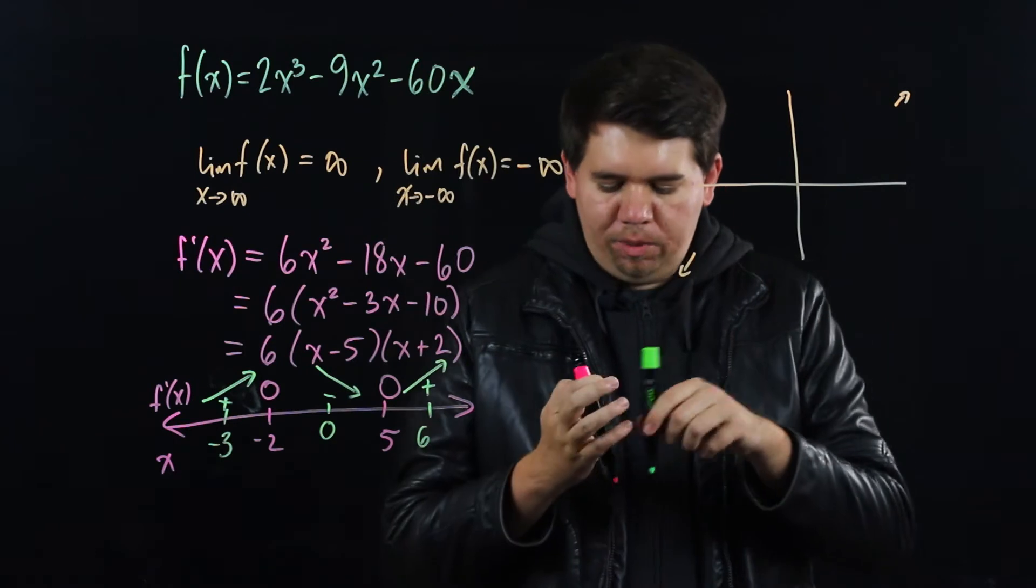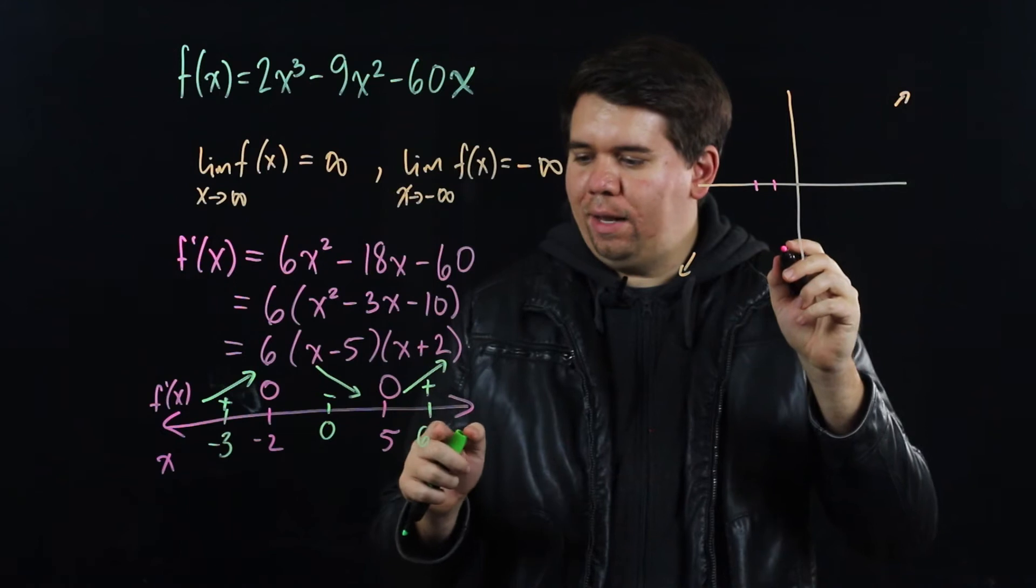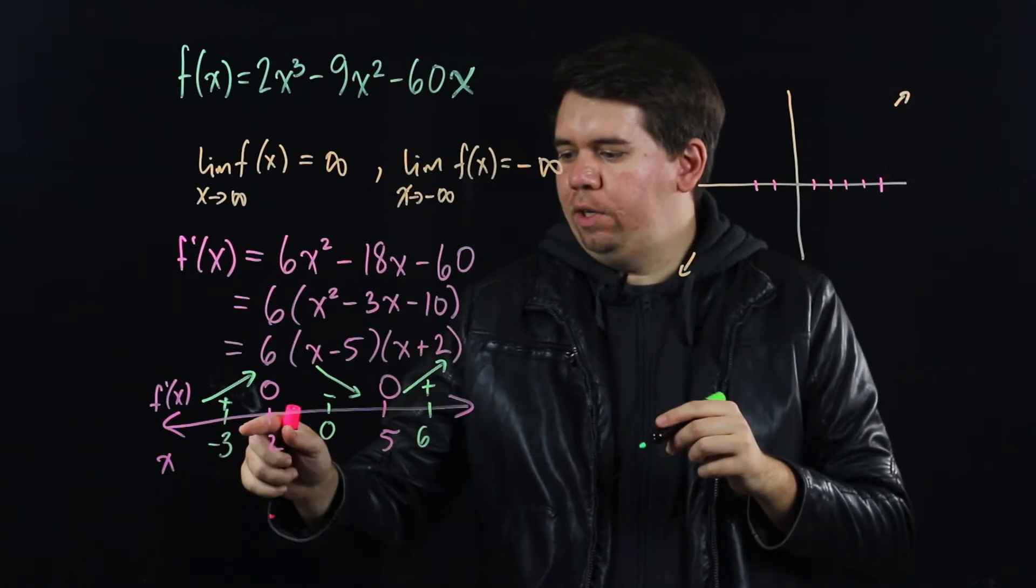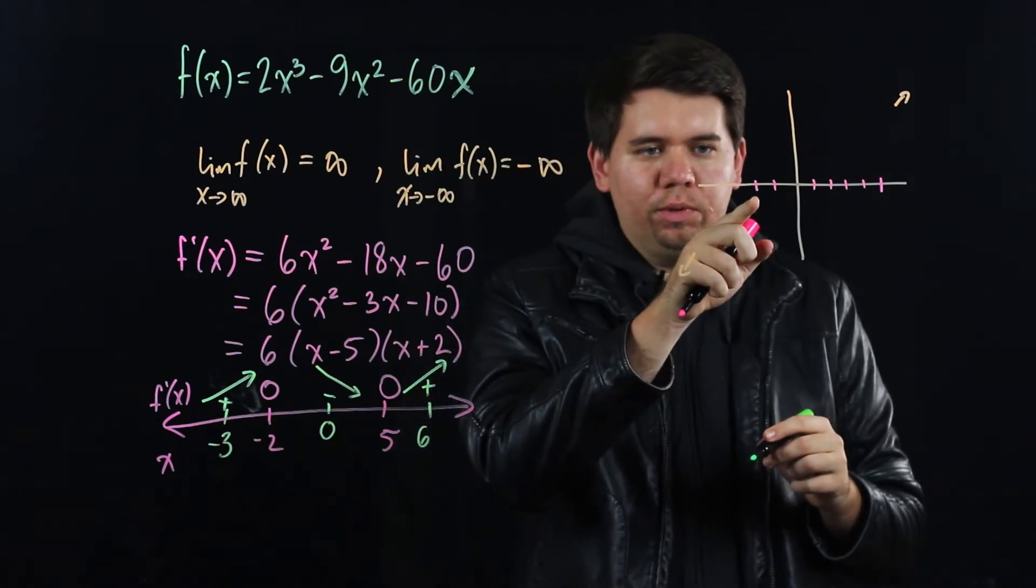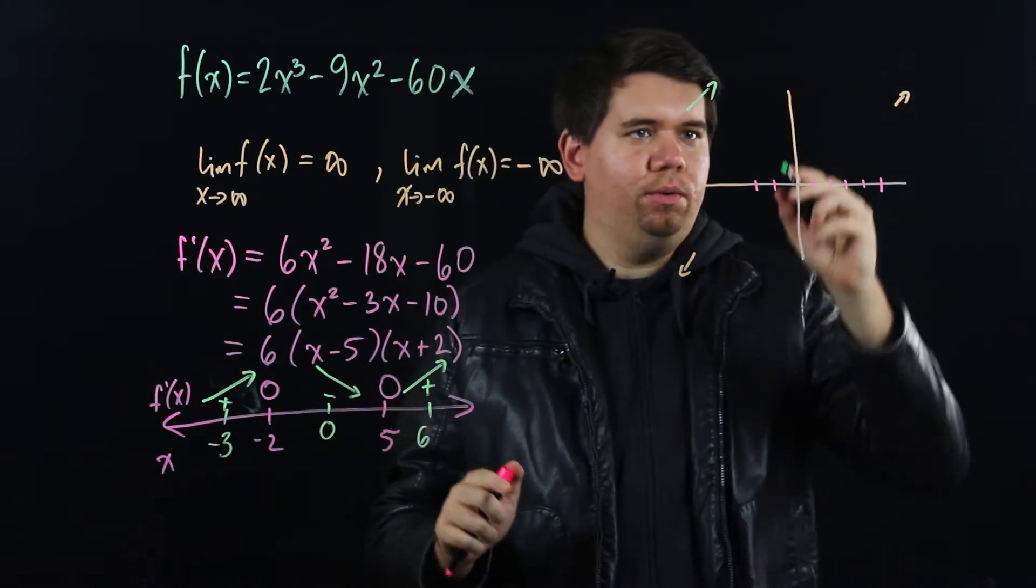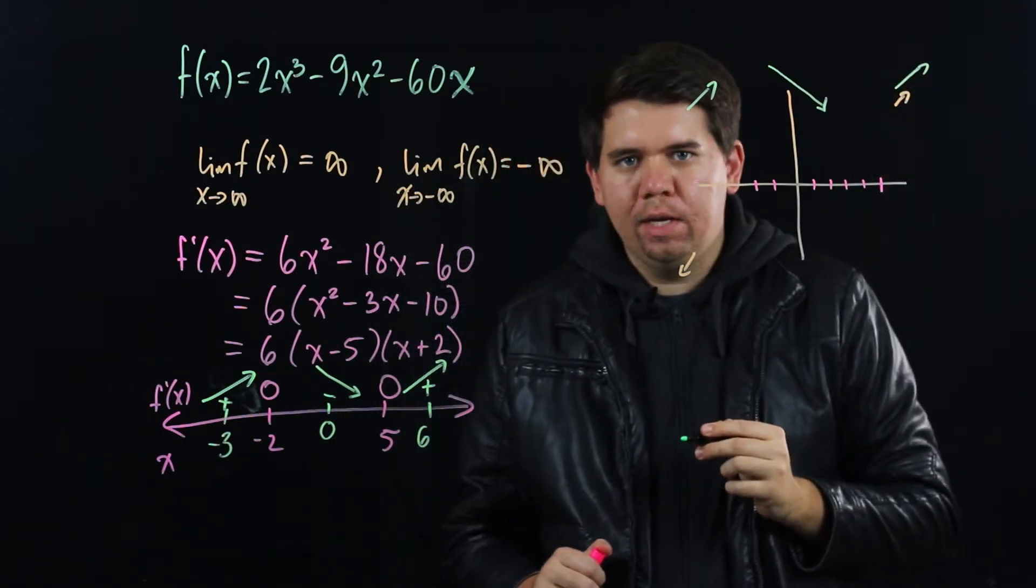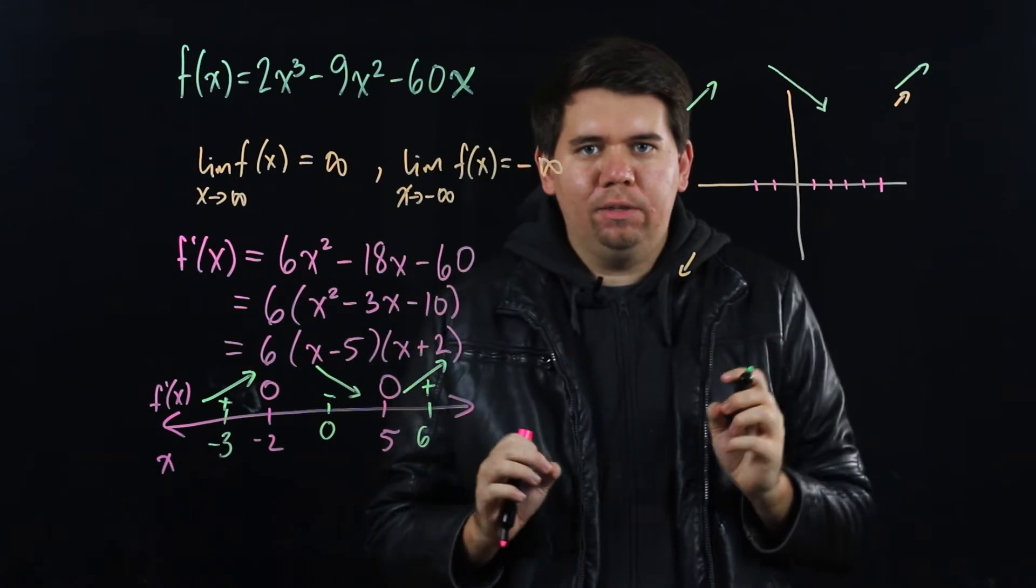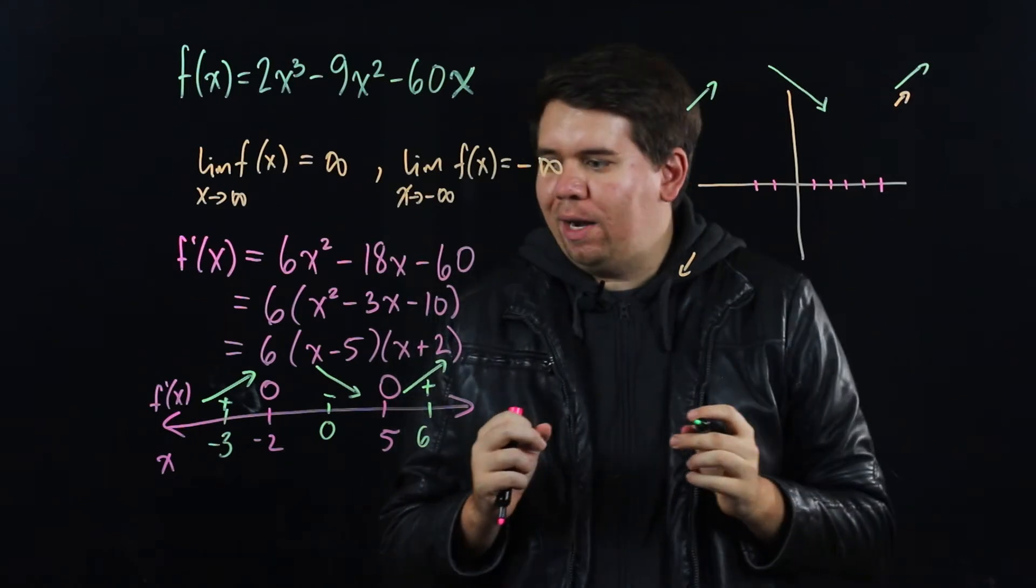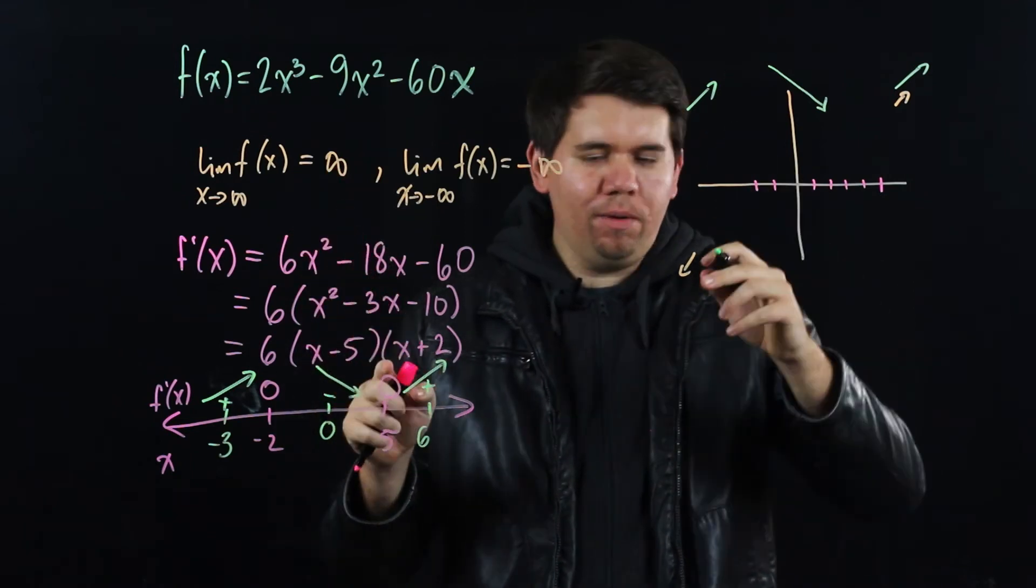Let's take note of this. We had a critical value at negative 2 and we had a critical value at 5. When you were smaller than negative 2, your function was increasing. Between negative 2 and 5, your function was decreasing, and then after 5, your function was increasing again. But what we really want to know is some idea of how this function looks. How do we glue these pieces together? It's probably worthwhile for us to actually figure out what these points are. Like if you plug negative 2 into your function, where are you at?